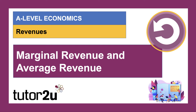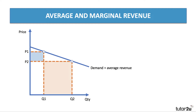Hi there, Geoff back again. Let's take a couple of minutes to think about how we draw marginal and average revenue on a diagram. Now, average revenue is, in fact, the demand curve. It's the price per unit that we can sell a given quantity of units at — the price that consumers are willing and able to pay for a product.